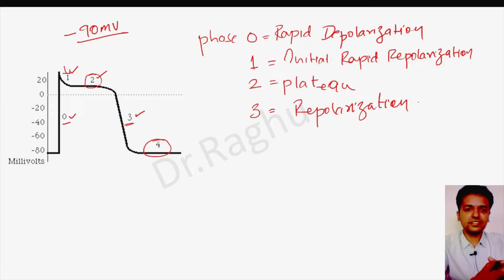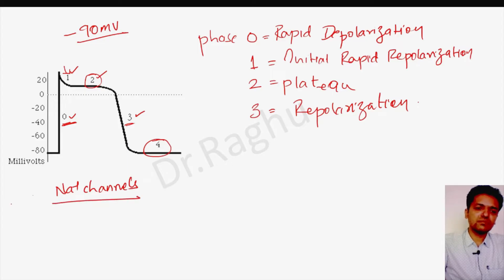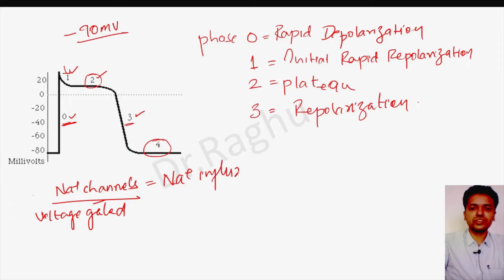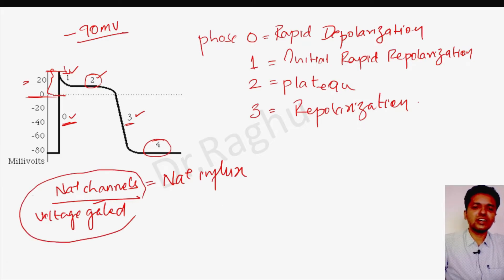Now let's understand the ionic basis of these phases. During phase zero, voltage-gated sodium channels open, causing sodium influx, and the cell undergoes rapid depolarization. There is a small overshoot above the zero level, reaching almost plus 20 millivolts. Once it touches plus 20 millivolts, these voltage-gated sodium channels close.